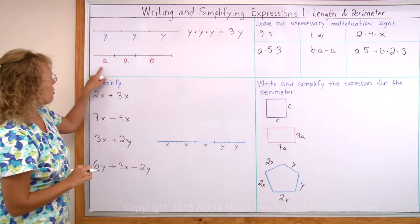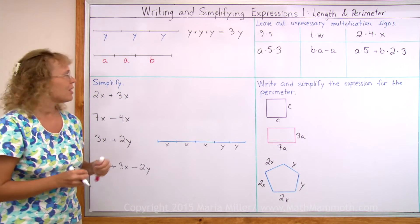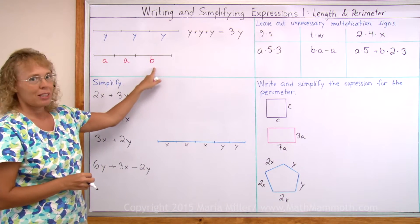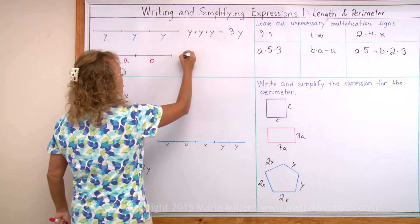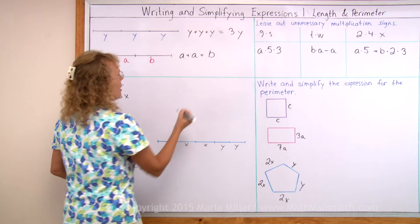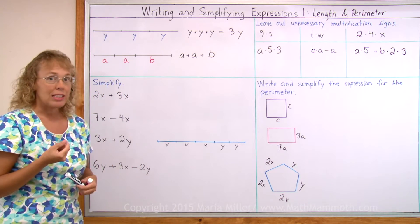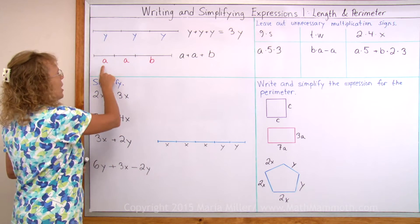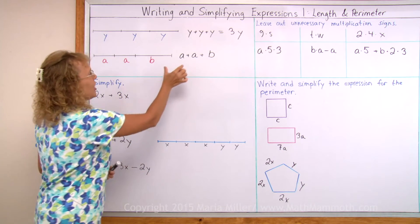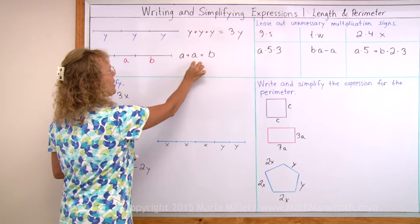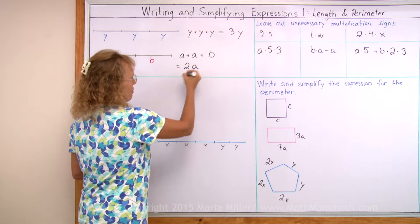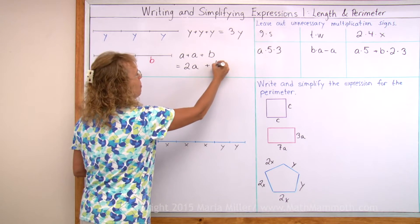How about this one? First we will write an expression for the total length: a and a and b. We need to add those, so it is a plus a plus b. But now we can simplify it a little bit, because a plus a — again you can use multiplication, you're adding the same number — so a plus a is the same as 2a. And then we have plus b.